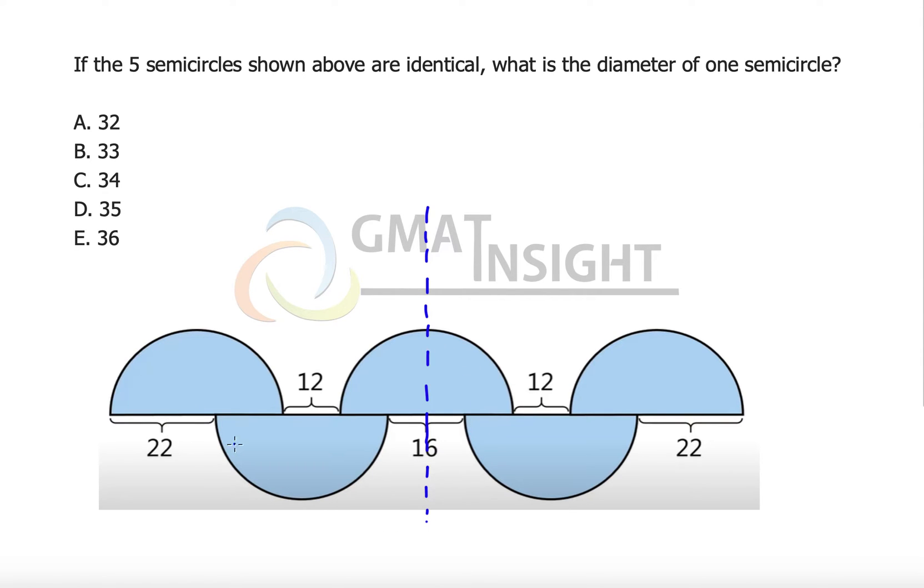Let's assume that the diameter of one semicircle is d. That means this particular distance left will be equal to d minus 22, and similarly this particular distance left will also be d minus 22.